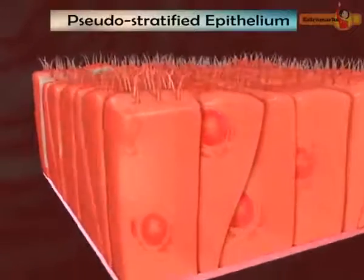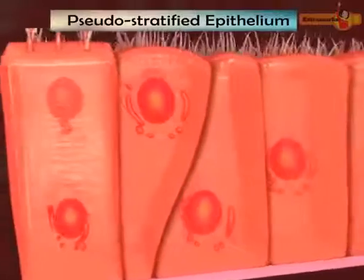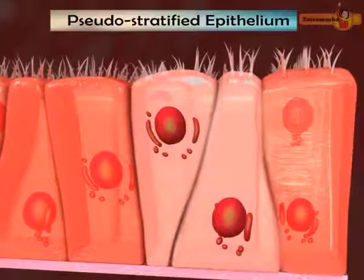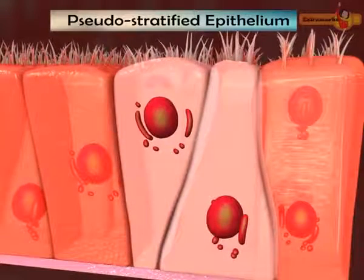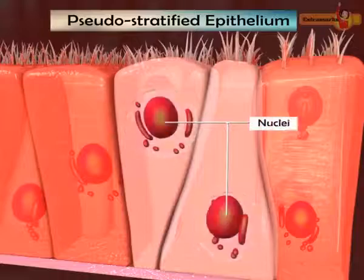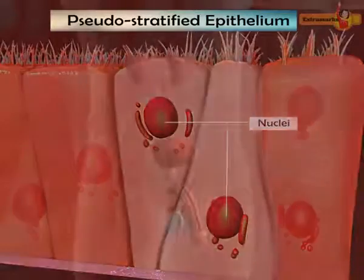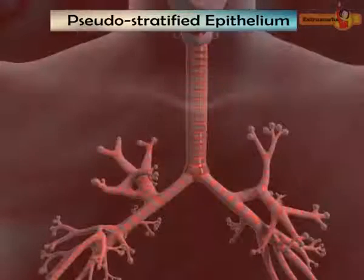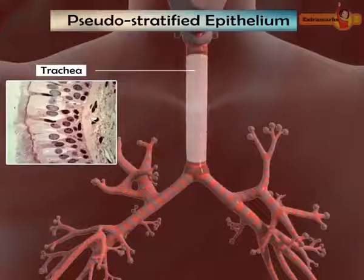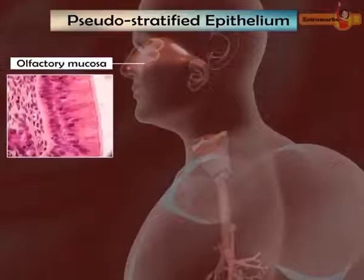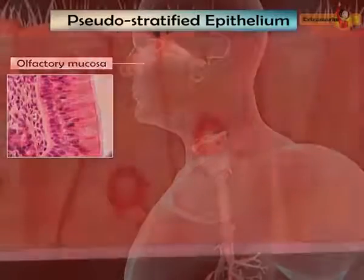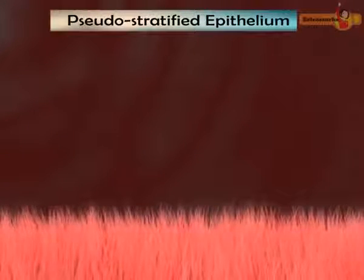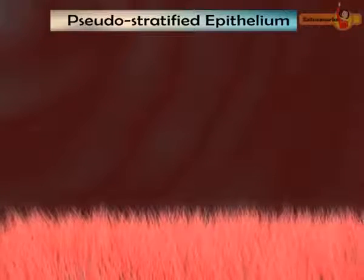Pseudostratified epithelium comprises a single layer of columnar cells, yet it appears two-layered due to differences in cell heights and placement of their nuclei at different levels. They are located in the inner lining of the urinary tract, trachea, and olfactory mucosa. This pseudostratified epithelium secretes mucus, and its cilia facilitate expulsion of foreign particles in the outward direction.